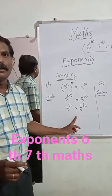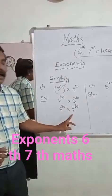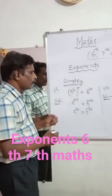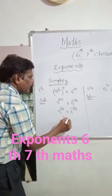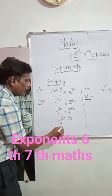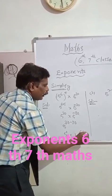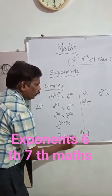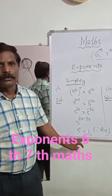The bases are equal, so we add the exponents. It is in the model of a to the power of m into a to the power of n. So the simplification gives 5 to the power of 30 minus 30, which is 5 to the power of 0. And 5 power 0 means 1, since a to the power of 0 is equal to 1.